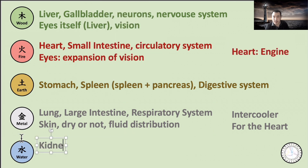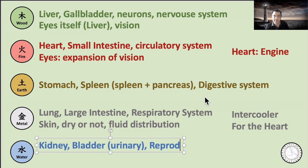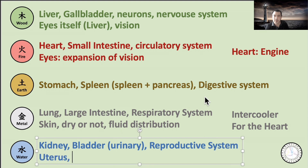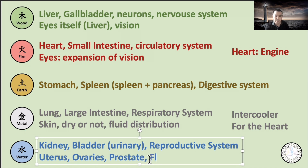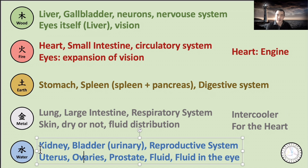The Water aspect is kidney and bladder — here the urinary bladder — and it includes the reproductive system: uterus, ovaries, prostate. Those are all considered the Water realm. Water can also be part of the fluid and eyes — if we think about the fluid in the eye. That is the generation cycle between Water and Wood. If Water has enough fluid and moisture, it can tonify the eyes, so the eyes become not dry.